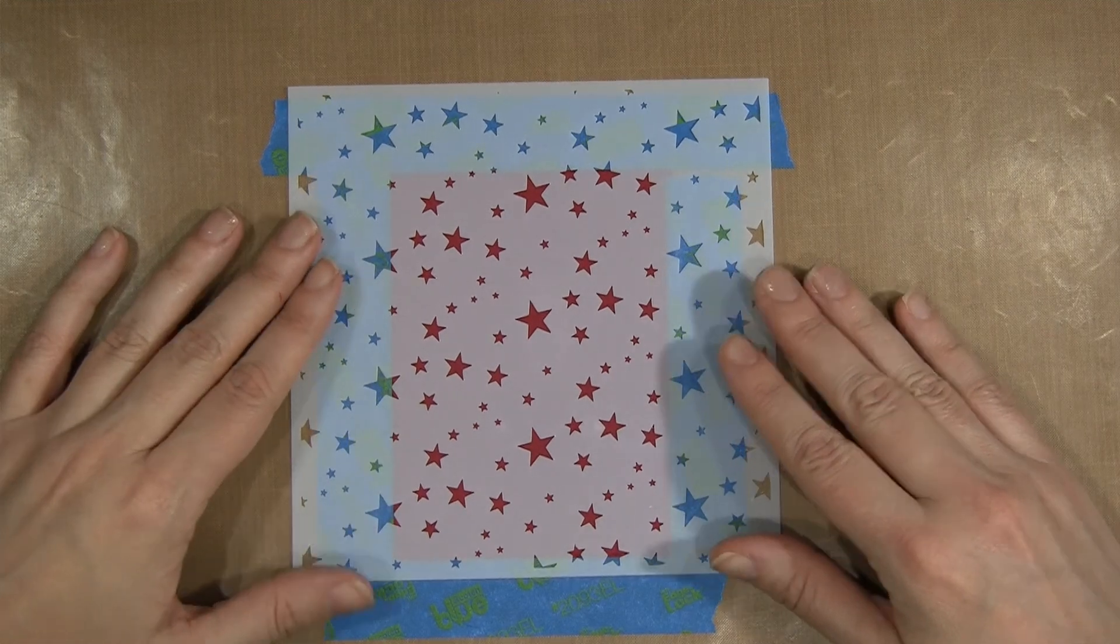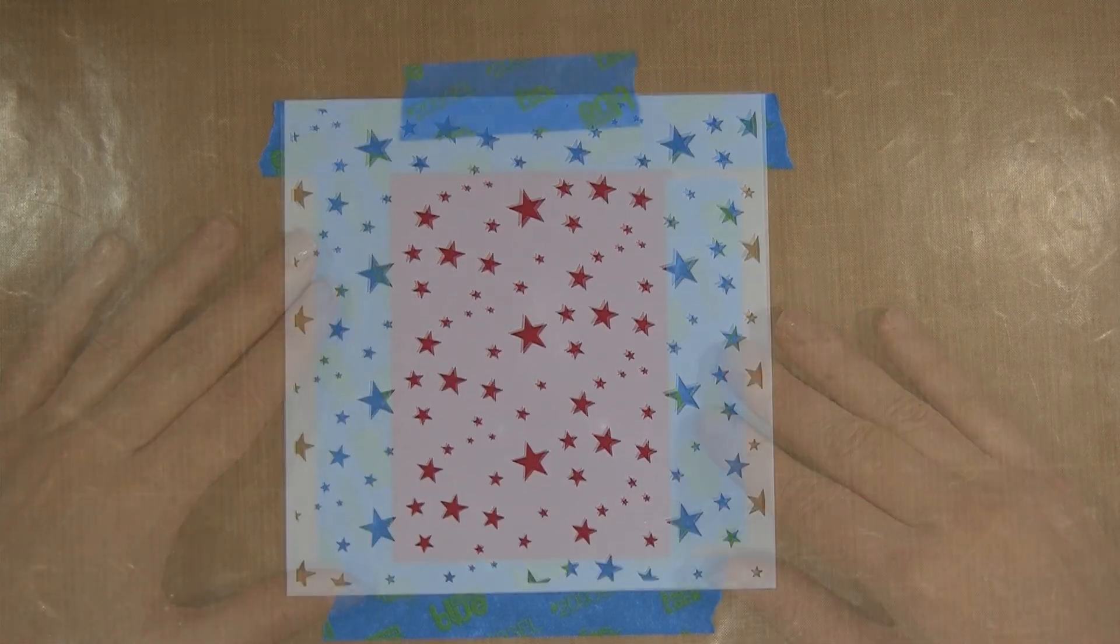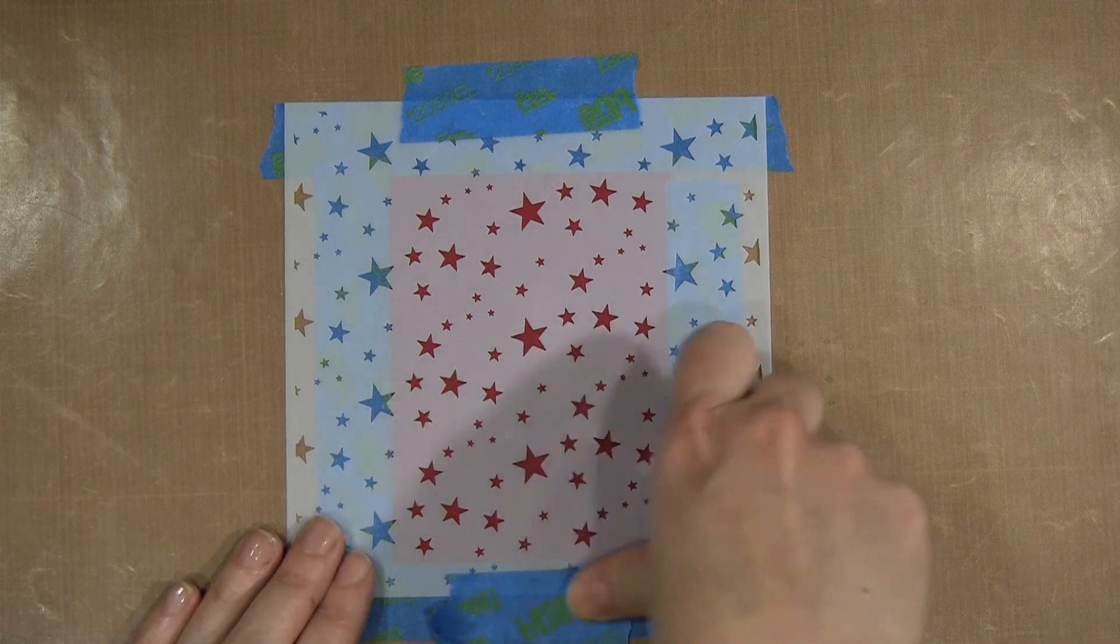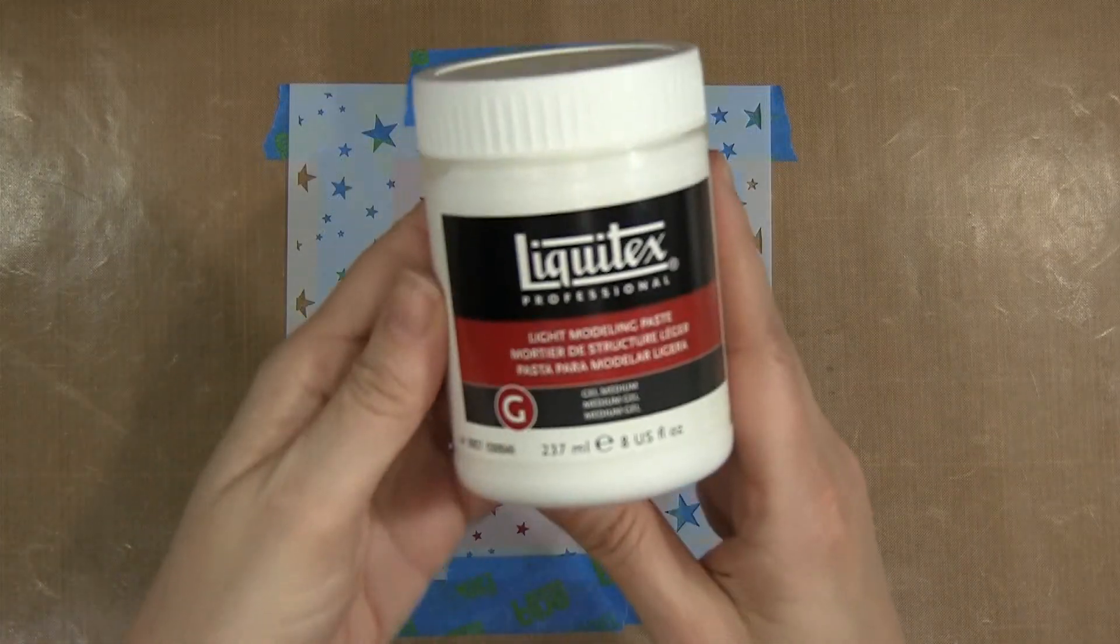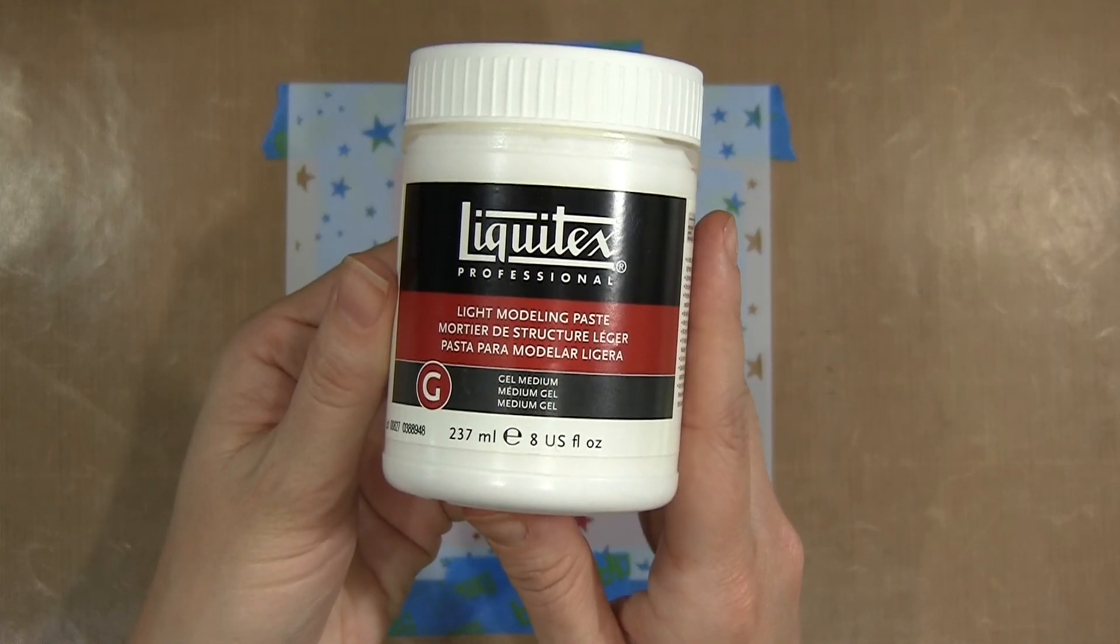I'm starting out with my cardstock taped to a craft mat using painters tape, and then next I'm lining up my star stencil over that background, placing it where I want it and again using some more painters tape to keep it in place. The tape just keeps it from slipping and messing up my background.